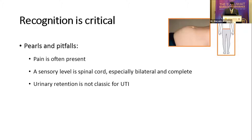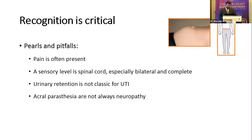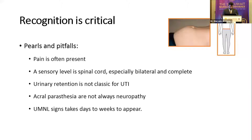Acral paresthesia is a tricky one. Usually we are taught this is pathognomonic for peripheral polyneuropathy. However, MS patients almost always have acral paresthesias — numbness in the fingertips and feet — and this localizes more likely to the cervical spinal cord than a peripheral nerve. Lastly, it takes days, weeks, sometimes months for upper motor neuron signs to appear. So don't dismiss a patient from the ER when they don't have the Babinski sign, for example.